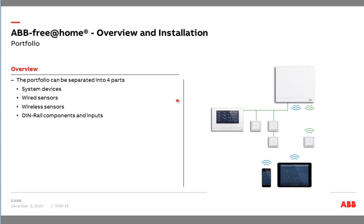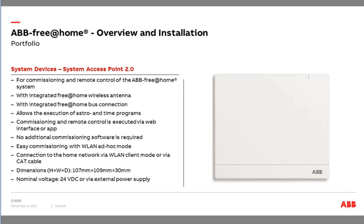In general we can separate the portfolio into four different parts: the system devices, the wired sensors, the wireless sensors, and DIN rail components with additional inputs. Starting with system devices: first of all the system access point — here the system access point 2.0, our newest version. This is more or less the heart of the system, the most important device.